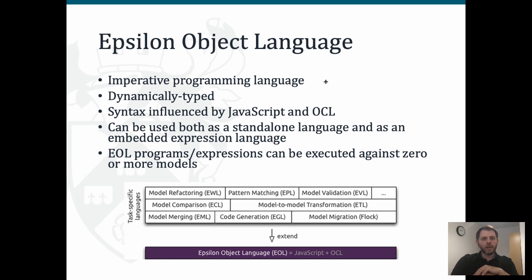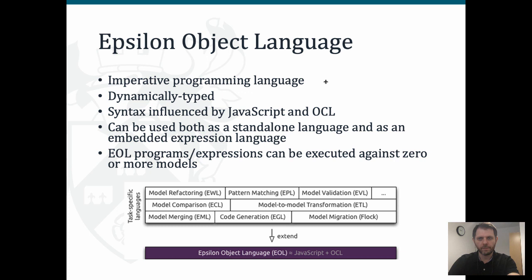EOL can be used both as a standalone language to query and modify your models, but its primary aim is to serve as an embedded expression language for task-specific languages such as EVL for model validation and EGL for model-to-text transformation. Here you can see how EOL is the foundation of the Epsilon family of languages, and then we have a number of languages sitting on top of it which reuse EOL as their core expression language, adding new syntax specific to the requirements of those different tasks. Today we're going to look at EVL and EGL.